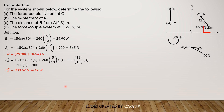For letter B, the x-intercept of R: if R is moved along its line of action to the x-axis, only the y-component has moment about O and it is counterclockwise, so the intercept is to the right of O. Thus 365 times A equals 939.62, giving A equals 2.574 meters. That's the x-intercept of R.